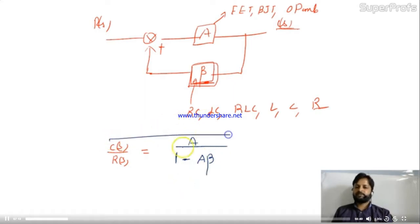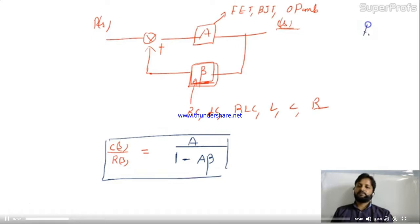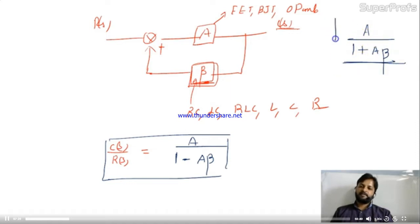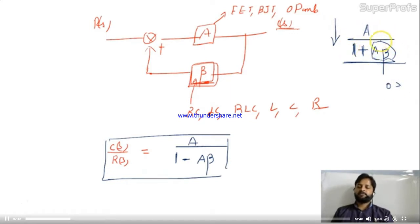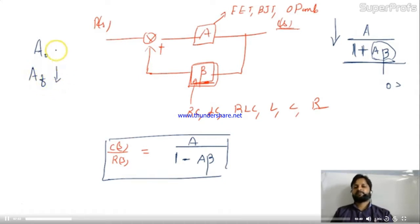Please observe carefully: in the negative feedback case, the denominator becomes 1 + Aβ, which is greater than 1, so the gain decreases. The closed-loop gain A_F is reduced compared to the open-loop gain A_O. But in the case of positive feedback, the denominator is 1 − Aβ, so the gain always increases.